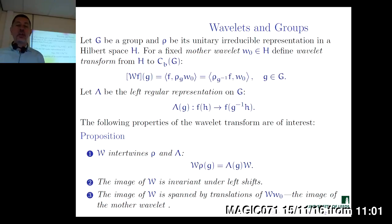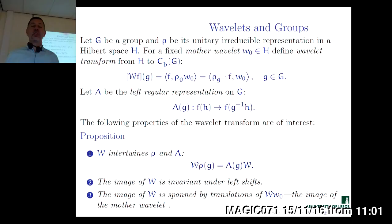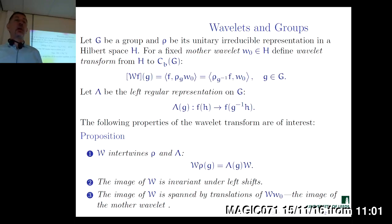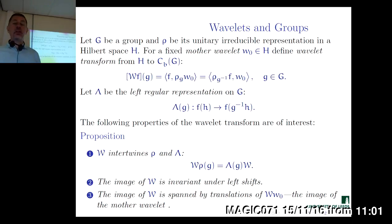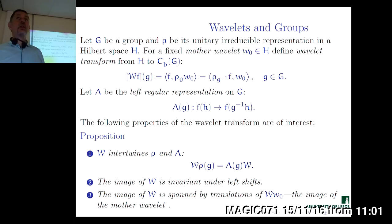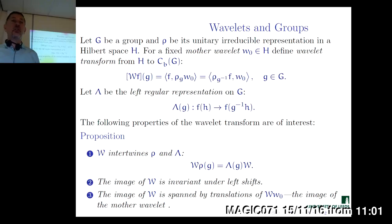The setup is as follows. We have a certain group G, and ρ will be its unitary irreducible representation in a certain Hilbert space H. A representation is a map from elements of the group to certain operators on the Hilbert space, such that when we multiply operators corresponding to elements g₁ and g₂, the product of these two operators shall be the operator produced by the product of g₁ and g₂. So that is a group homomorphism from G to the group of unitary operators on H.